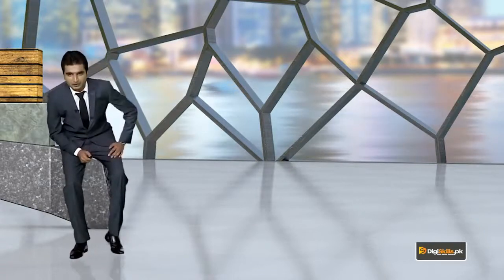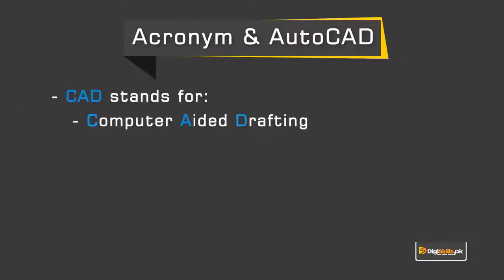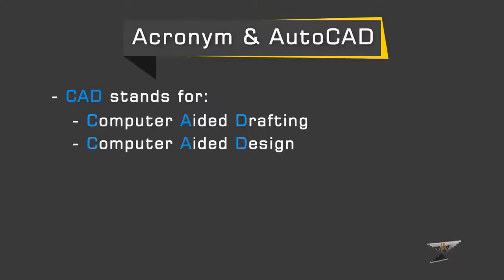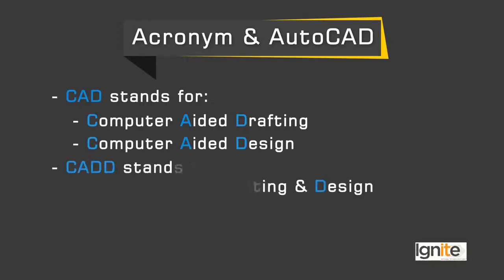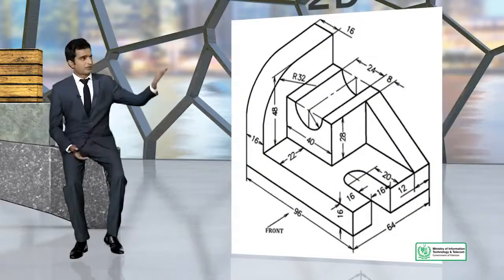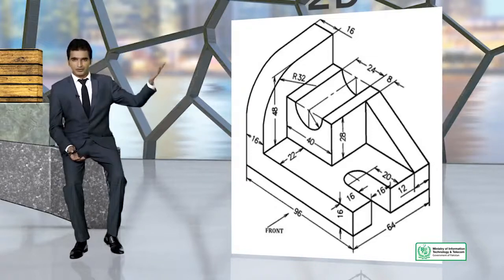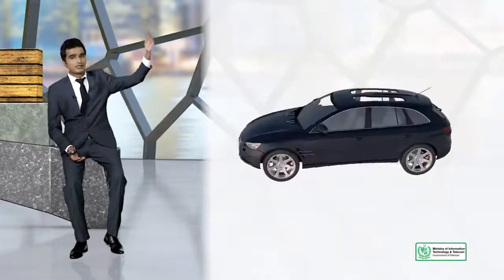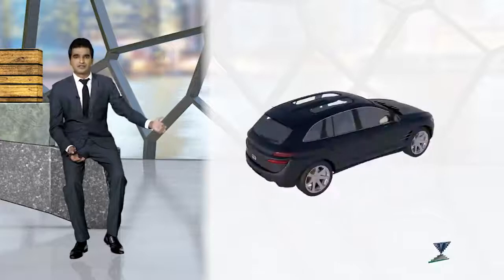Now the question is the abbreviation of AutoCAD. CAD basically stands for Computer Aided Design or Drafting. We can use this in the design context and drafting. Another word we use is CADD, which means Computer Aided Design and Drafting as well. It is basically 2D and 3D software — we can create 2D structures as well as 3D structures.